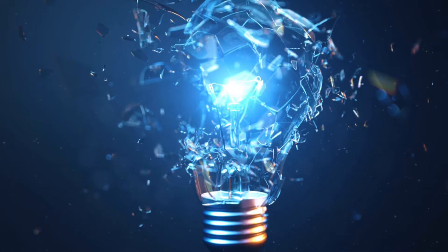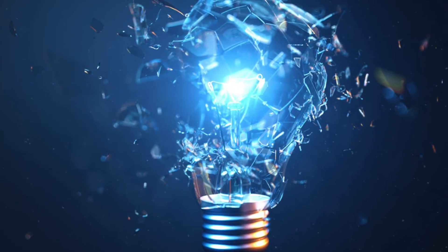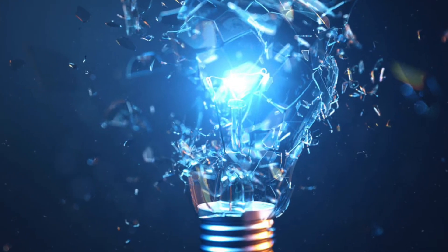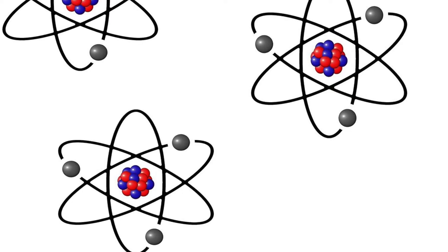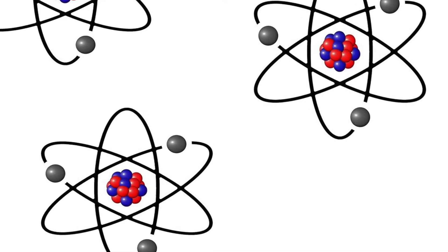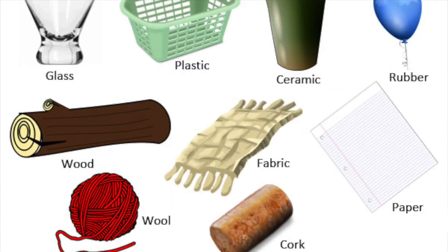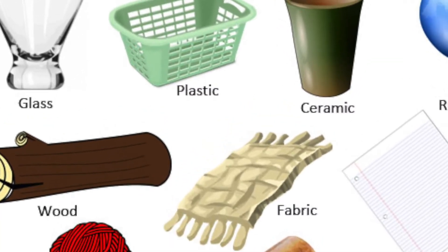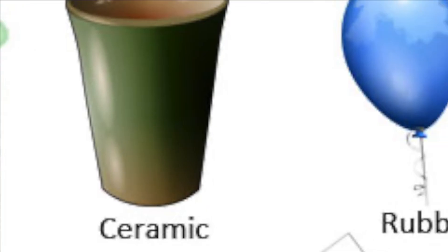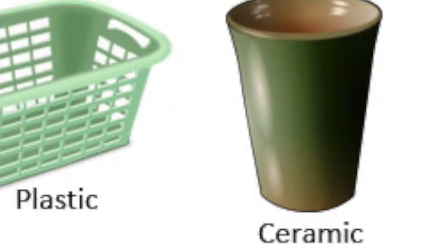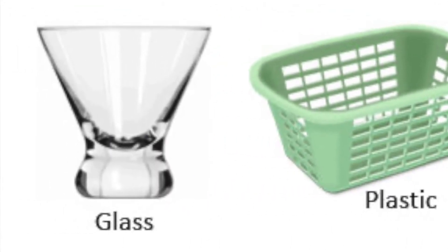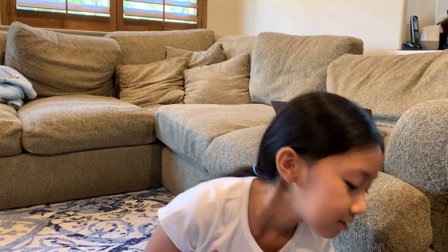On the other hand, insulators don't let energy move freely. The electrons inside insulators are forced to stay in their atom. Some good insulators include plastic, rubber, glass, and dry wood. For example, electric cords are wrapped in rubber so that the energy stays within the cord and doesn't electrocute you.